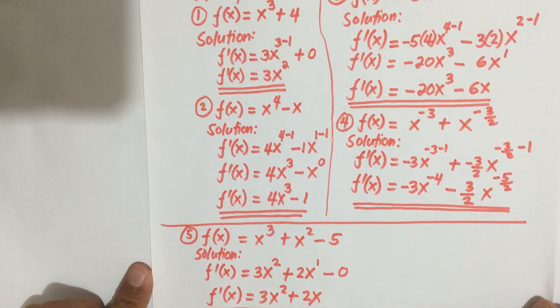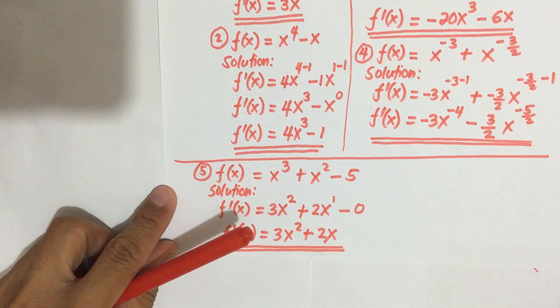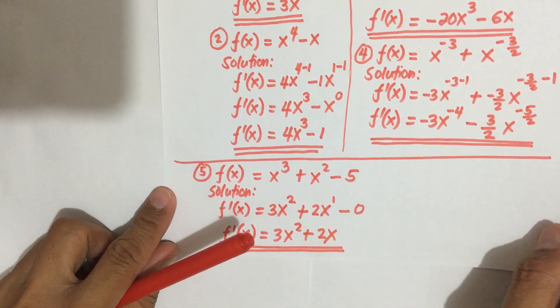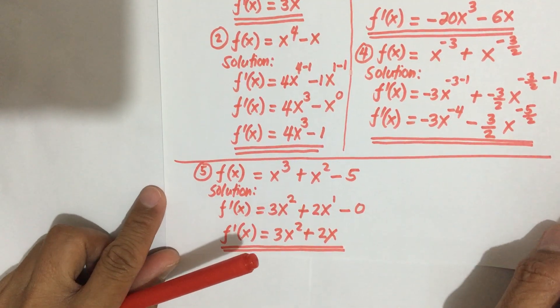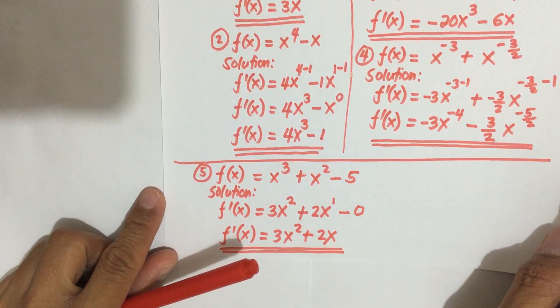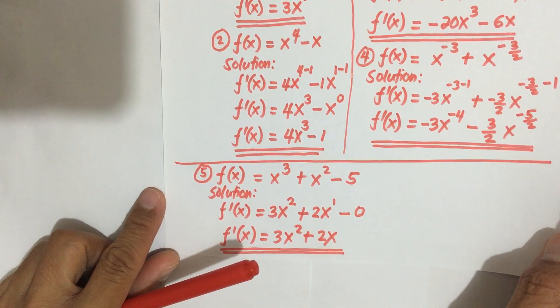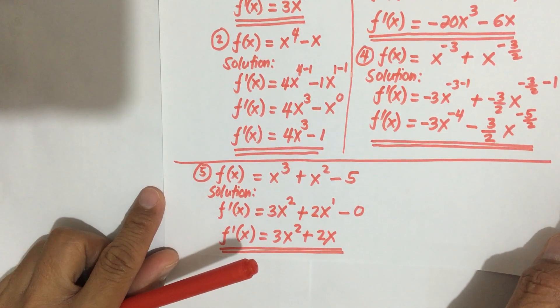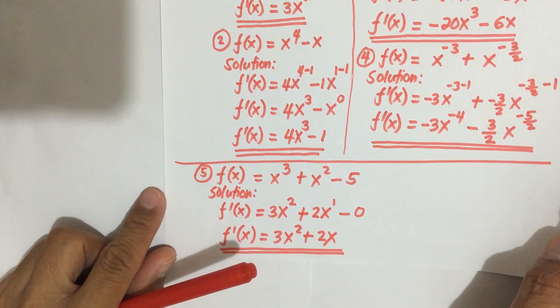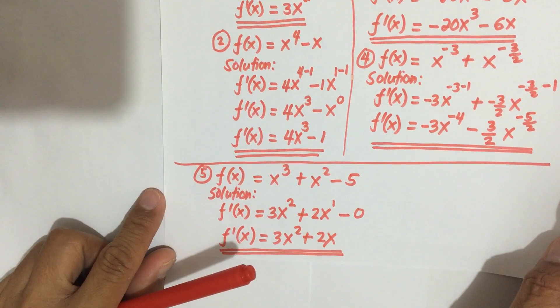Alright, those are our five examples for this part on the sum rule. That's all for today — hope you have understood everything. If you have any questions, send your message below. Thank you very much.